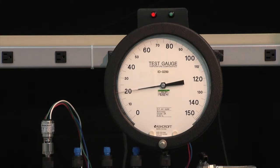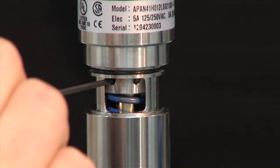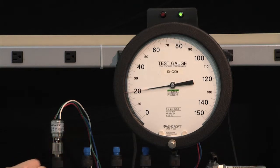Now we will go back in and adjust. We are going to turn counterclockwise to lower the set point. So we will put our tool in and make the adjustment. Counterclockwise until the switch turns on. And the switch turned on.